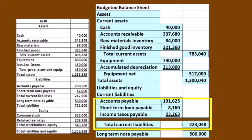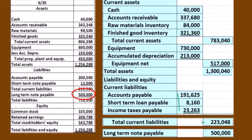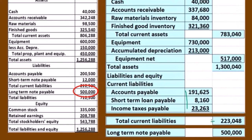Then we have the long-term note payable. That doesn't change in this particular problem — it was $500,000 at the beginning of the time frame. We're paying off interest only during this quarter, therefore the principal does not go down, so we're still at $500,000.